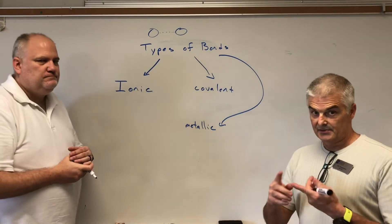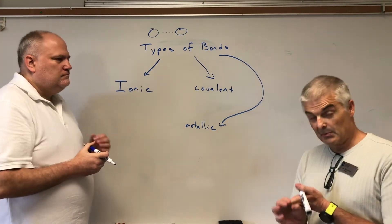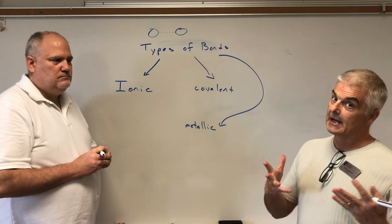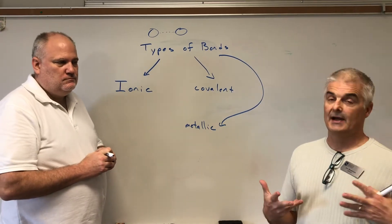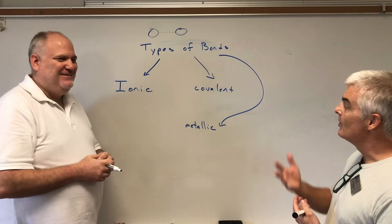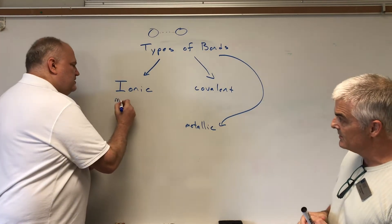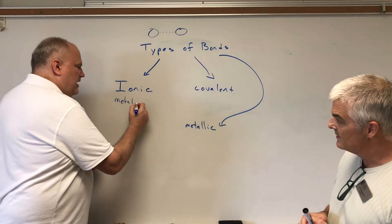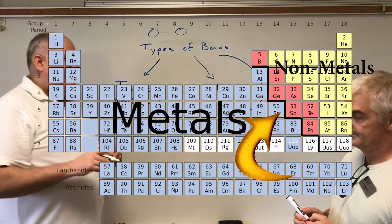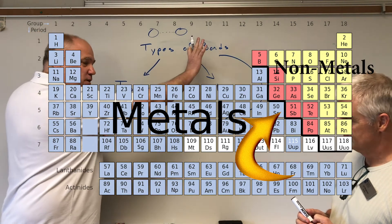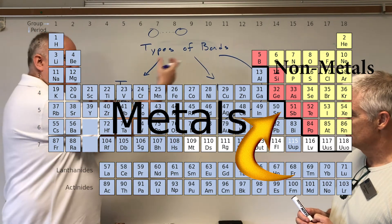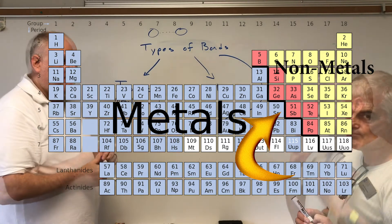We have three types of bonds: ionic, covalent, and metallic. If you remember back to our study of the periodic table, we have metals and non-metals, and depending on what type of element you have will depend on which type of bond you have. An ionic bond is always between a metal and a non-metal. If you look at your periodic table, there's a darkened staircase - anything upper right is a non-metal, anything lower left is a metal. If you take one from each, the only way they'll bond is with an ionic bond.